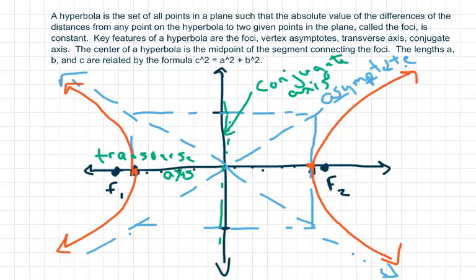Hi everyone, this is the video on hyperbolas. The hyperbola is actually an ellipse that's split open. The key features are foci, vertex, asymptotes, and the transverse axis, which is the main axis, and the conjugate axis, which is like the minor axis.